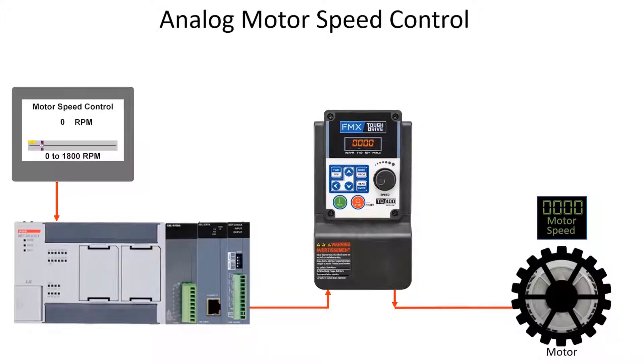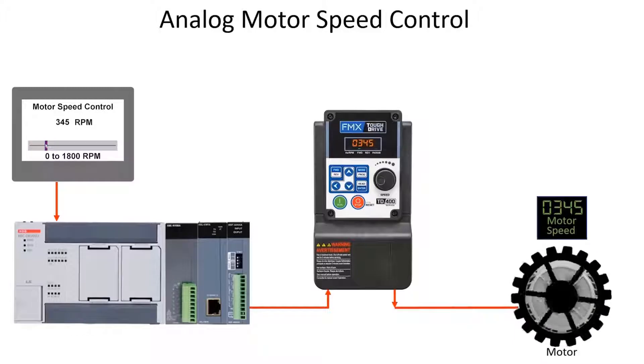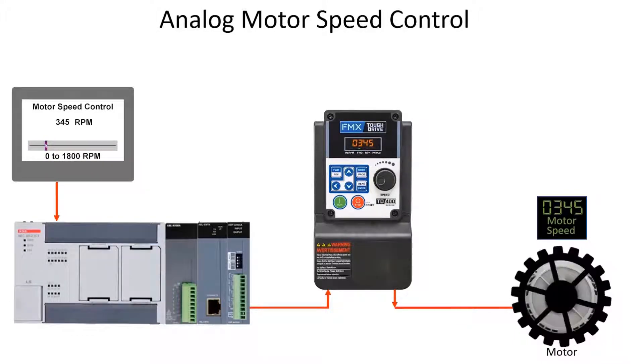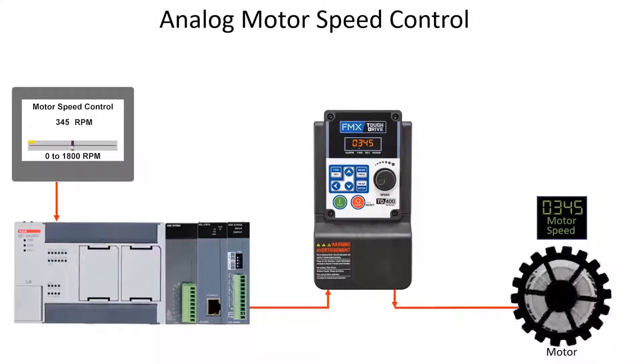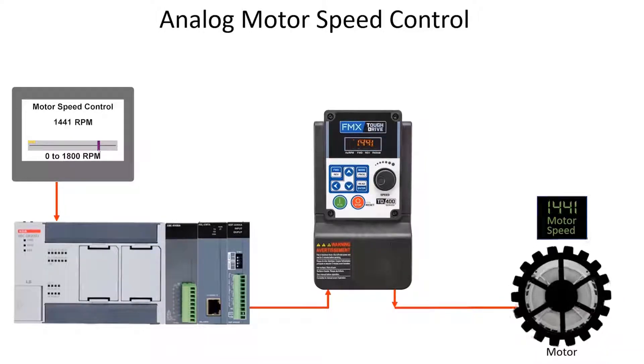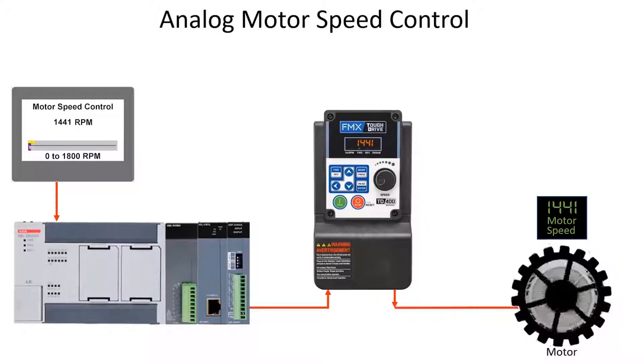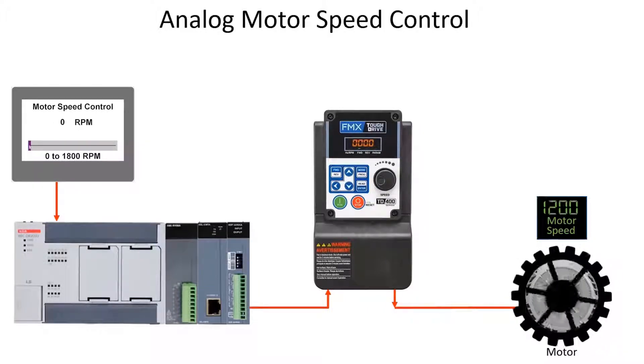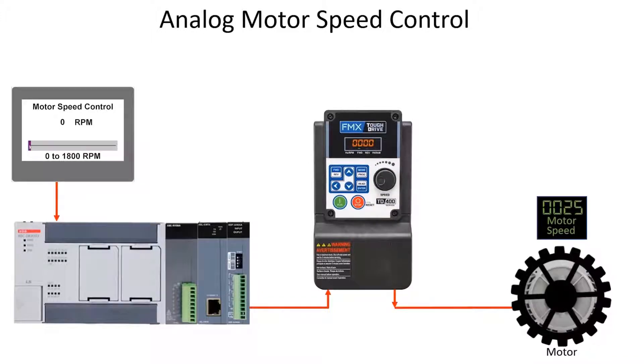To summarize, a speed command is entered with the operator interface. Ladder logic scales the motor RPM value to an analog voltage. This voltage is output from the PLC analog output to the VFD. The motor speed is controlled by the VFD based on the analog voltage from the PLC.